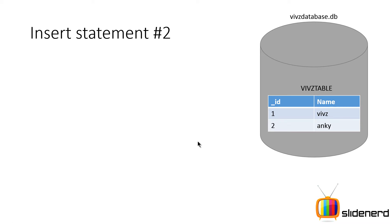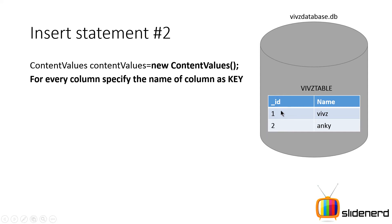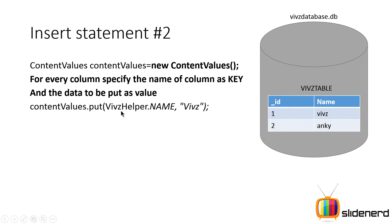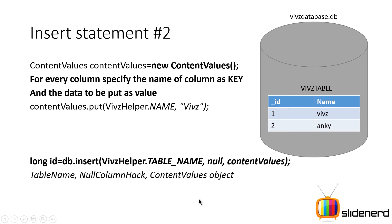Now let's talk about the Android way. You create an object of the class ContentValues, which works like a Map in Java — it takes a key and a value. The key is the column name and the value is the data you want to insert. For example: contentValues.put(WebsHelper.NAME, "webs"). Then you call db.insert(), passing the table name, a null column hack parameter, and the ContentValues object.